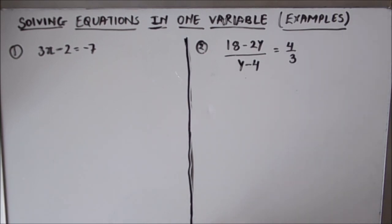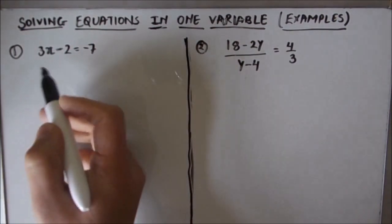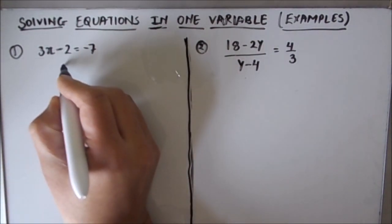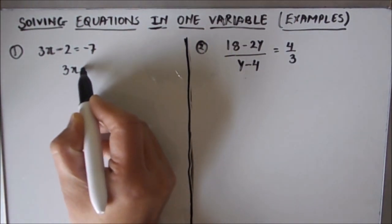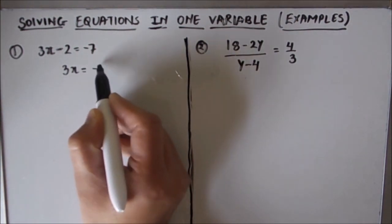The first equation is 3x minus 2 equals minus 7. The first step in these type of equations is to separate the constants and the variable. Here the variable is 3x, so we will keep 3x on the left hand side and move all the constants on the right hand side.